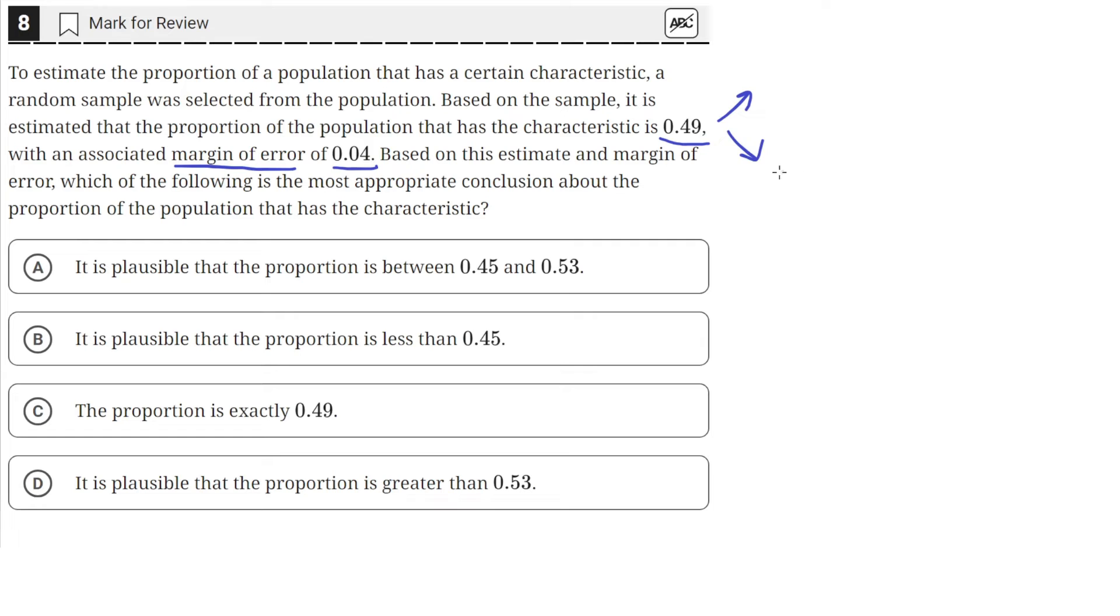So the lower bound of the interval will be 0.45, because that's 0.04 less than 0.49. And then 0.04 greater than 0.49 is 0.53.